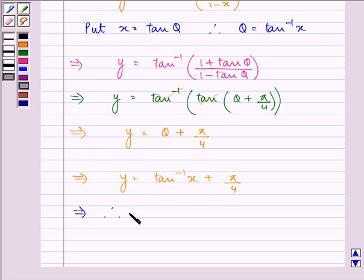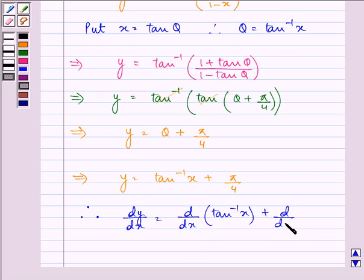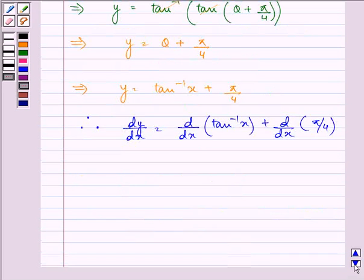So we have on differentiating it, dy/dx is equal to d/dx of tan inverse x plus d/dx of pi by 4. Since pi by 4 is a constant, we have dy/dx equal to,